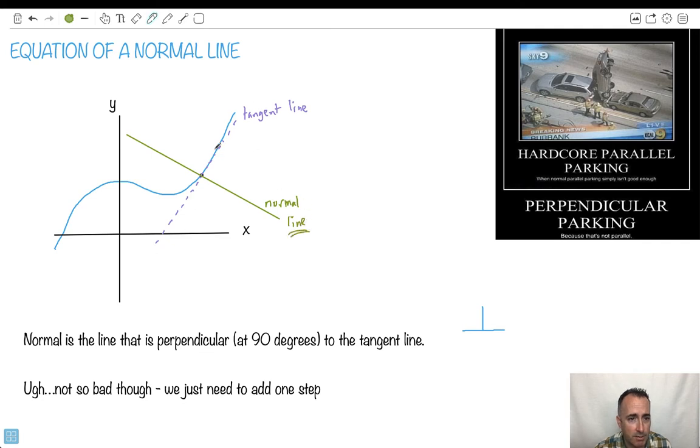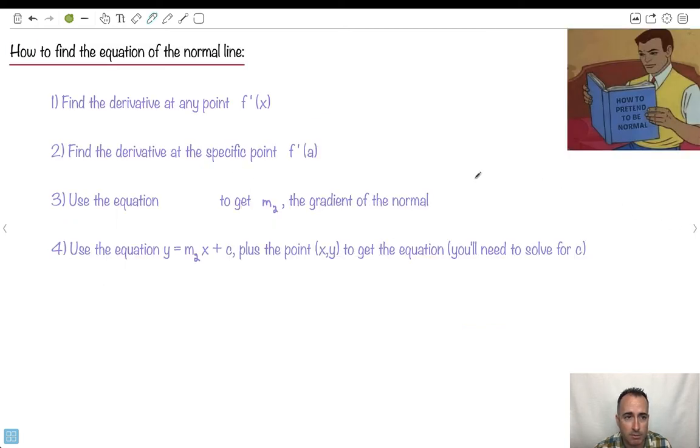So it's very much like a tangent line, so we're gonna do a lot of the same things. I'm saying it's not so bad, we just need to add one step to what we've done for tangent lines. So if you remember what we did for a tangent line, like how to pretend to be normal. Get it? Because we're doing normal lines.